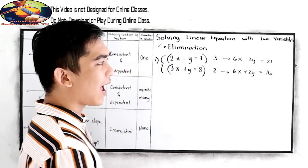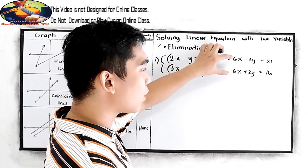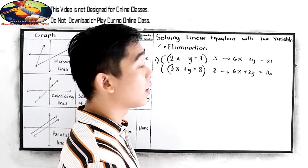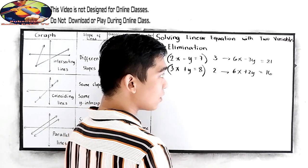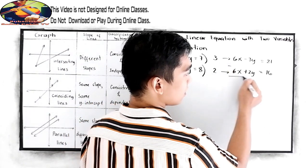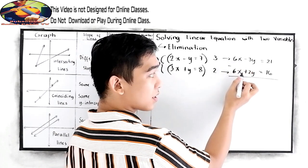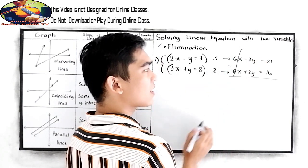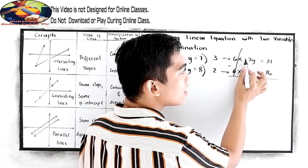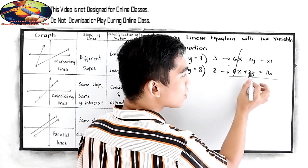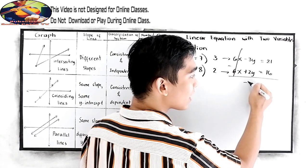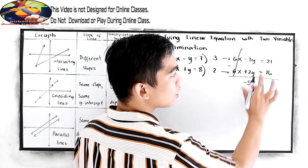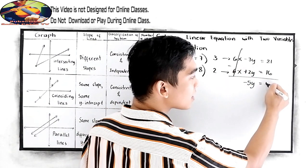Notice that our coefficients in our x are the same. So to eliminate that, we need to subtract. 6x minus 6x, that will be 0, or we can just cancel that. Now negative 3y minus 2y, that is negative 5y, is equal to 21 minus 16, that is 5.